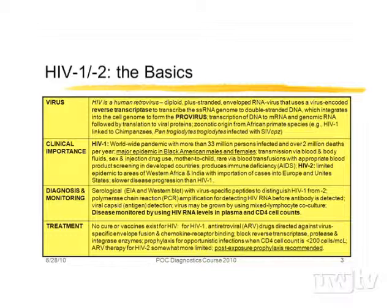HIV is a retrovirus characterized by having a reverse transcriptase, which is viral-specific — we don't encode that enzyme. Other viruses with similar biology include HIV-2, primarily in West Africa but present in the United States — in the last year or so, 1% of our new infections were HIV-2. There are also the primate lymphotropic viruses and human lymphotropic viruses HTLV-1, 2, 3, and 4 that infect humans as well. Hepatitis B virus also has reverse transcriptase and may come up in point-of-care testing.